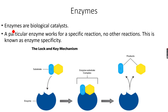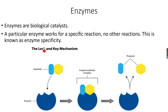The most important feature of an enzyme is that it works for a specific reaction. For example, the enzyme amylase, which is present in our bodies, works to break down starch into sugar molecules. It is only used for that particular reaction and cannot speed up any other reaction. This characteristic is known as enzyme specificity.